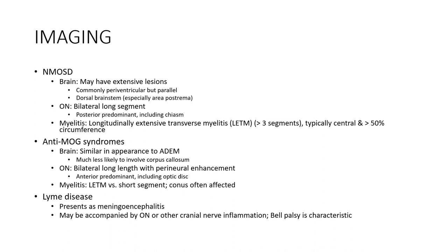NMOSD brain imaging may show extensive lesions, formerly periventricular but far larger than those of MS — especially involving the area postrema. The bilateral long-segment posterior-predominant pattern includes chiasmal involvement. Spinal cord shows long-segment transverse myelitis, more than three segments, typically central and involving more than 50% of the circumference.